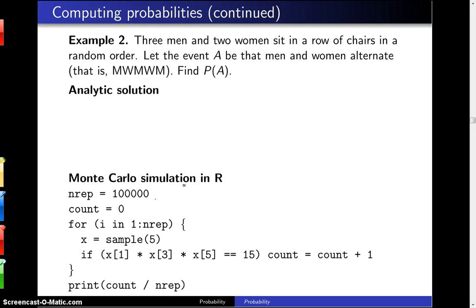Three men and two women sit in a row of chairs in a random order. Let the event A be that men and women alternate in order, that is man, woman, man, woman, man. Find P(A).